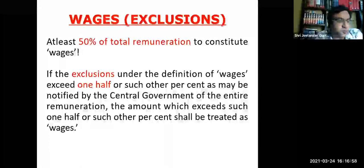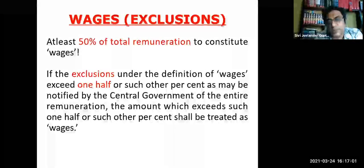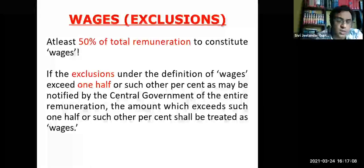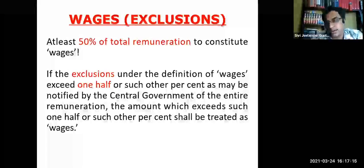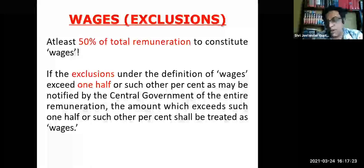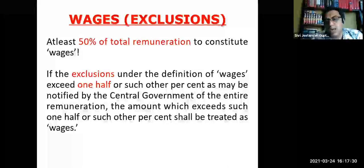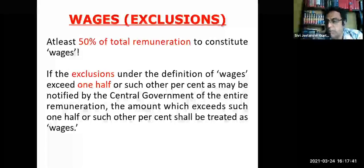An important feature: there are many cases where the basic wage — primarily basic and DA — is less than the other allowances, and may not even be 50% of total remuneration. The code says that if the exclusions under the definition of wages exceed one half — or such percentage as the central government may fix — then the amount which exceeds half will also be treated as wages. An example will illustrate this shortly.